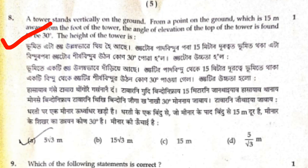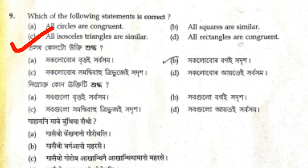For question 8, the right answer is A: 5 root 3 meters. The option is 5 root 3 meters, so the right answer is 5 root 3 meters.